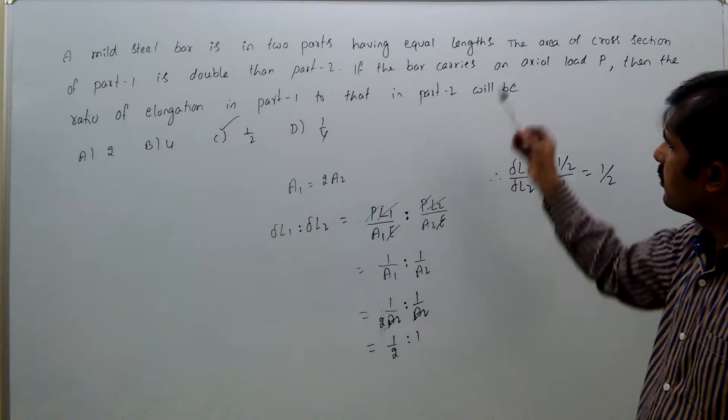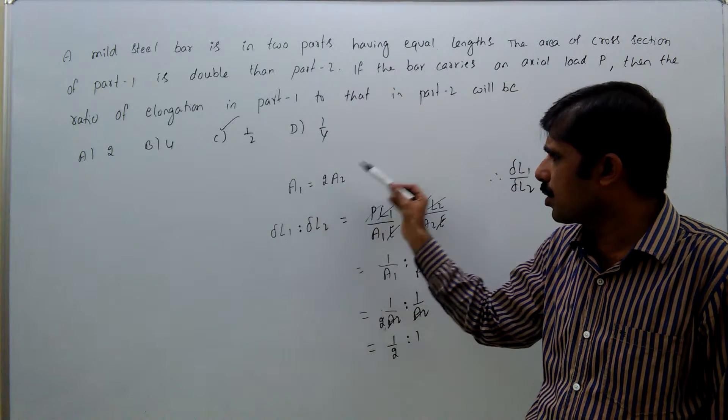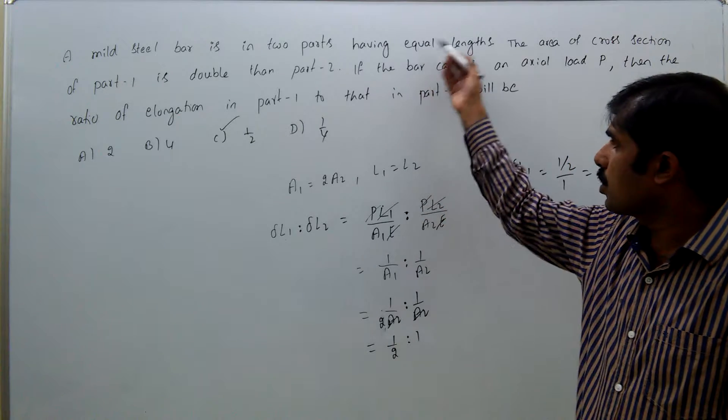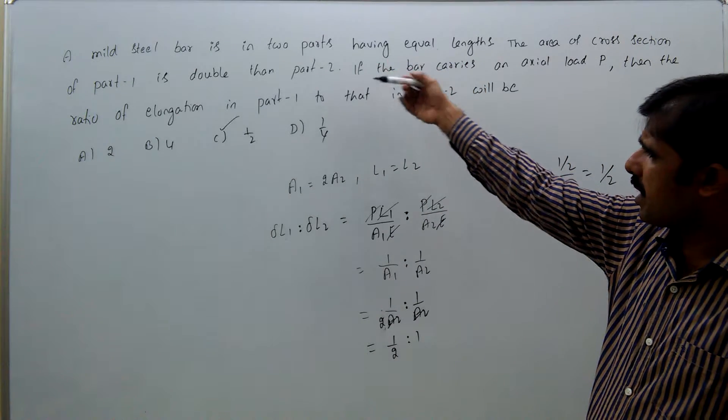It's clearly given area of cross-section of part one is double the part two, that means A1 = 2A2. And L1 = L2, as given both are same lengths. Same material means mild steel, so E1 = E2.